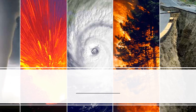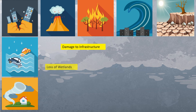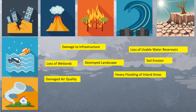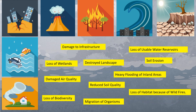Now let's see the impacts of these natural disasters on ecosystems. Major impacts include damage to infrastructure, loss of wetlands, destroyed landscapes, loss of usable water reservoirs, damaged air quality, soil erosion, heavy flooding of inland areas, reduced soil quality, loss of biodiversity, migration of organisms, and loss of habitat because of wildfires. There are many more impacts, but these are the major ones caused by natural disasters on ecosystems and organisms.